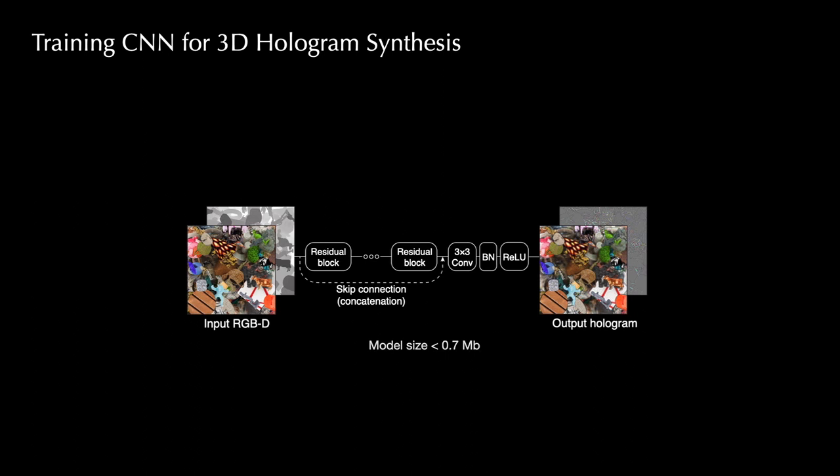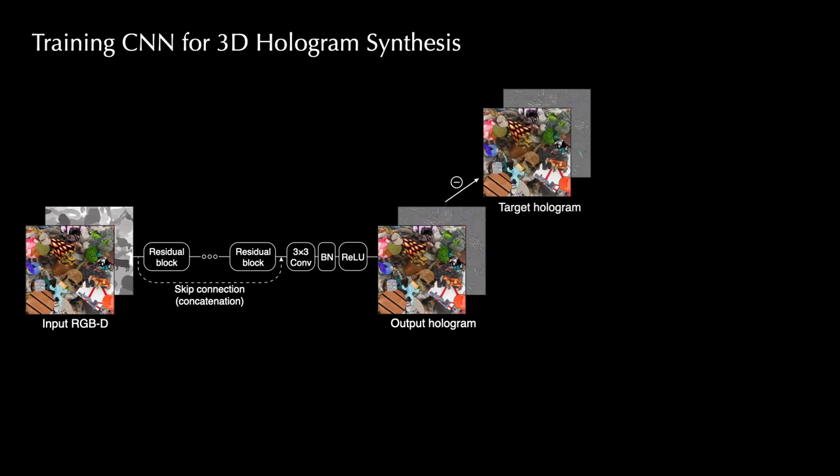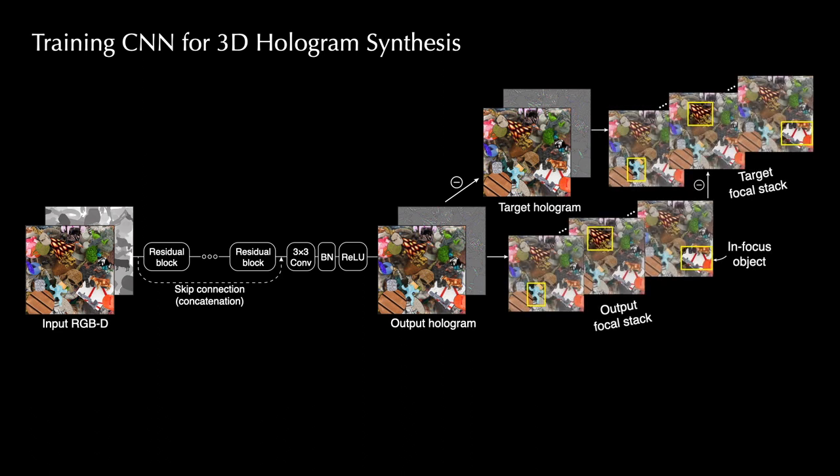We train the network with two losses. The first loss directly minimizes the L2 distance between the output hologram and the target hologram, with a correction that ignores the global phase offset. The second loss is a dynamic focal stack loss, which propagates the current batch to a set of focal distances that vary per training iteration and minimizes the L1 difference between the perceived depth of field images.